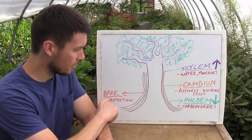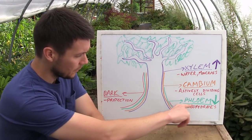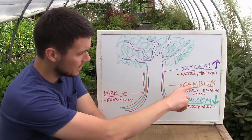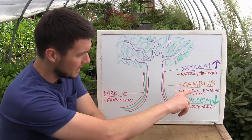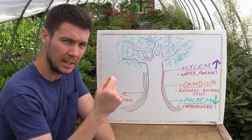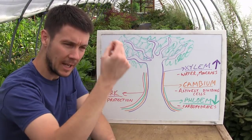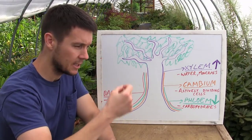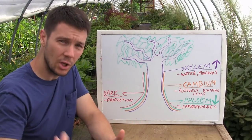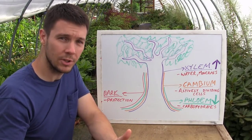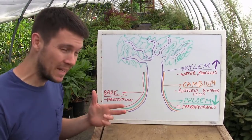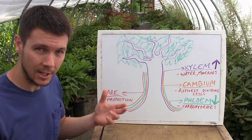So the bark is the outer layer, next comes the phloem just underneath the bark, then comes the cambium, then comes the xylem. The cambium lies between the xylem and phloem and contains all the actively dividing cells, so it can continually make more xylem and phloem to support the tree's efforts in growing. Now that we've got the basics out of the way, let's talk about layering.